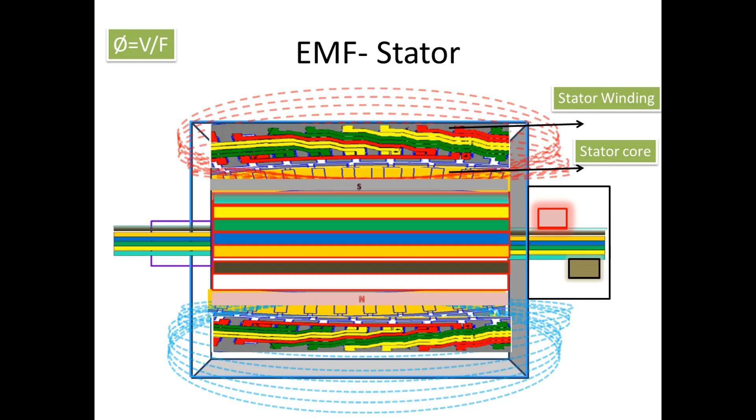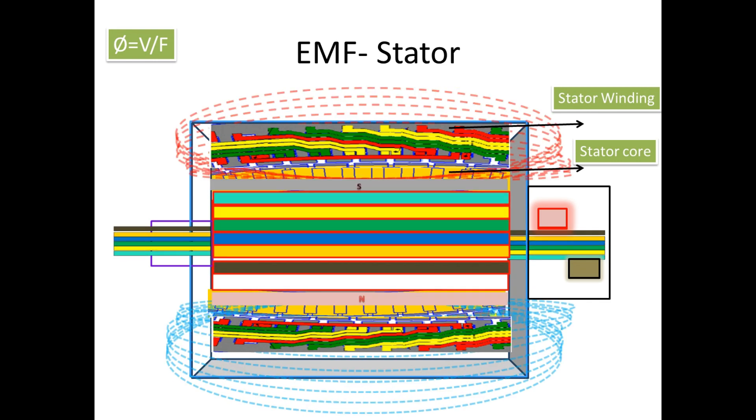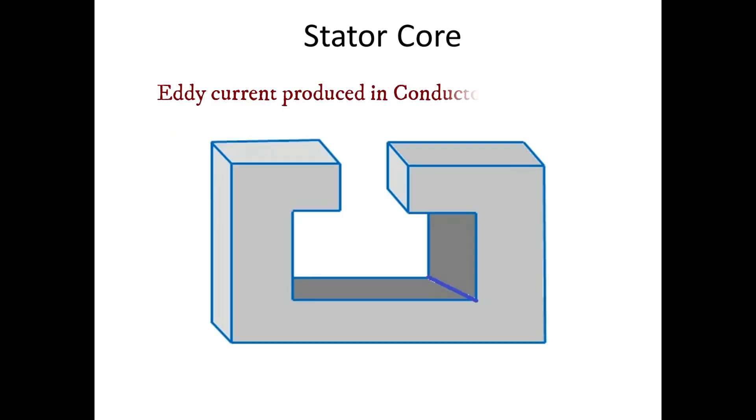If you see this flux, it causes two losses on the core: one is hysteresis and another one is eddy current. This eddy current is produced on ferromagnetic material. The core is made up of ferromagnetic material, which is nothing but a circulating current.